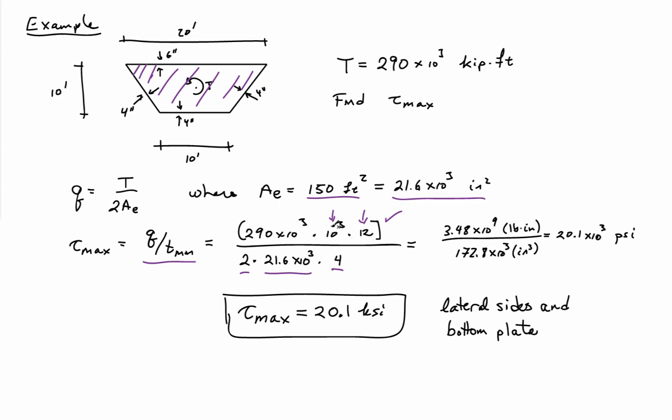Plugging everything into the calculator, I compute 20.1 times 10³ psi. So the maximum shear stress is basically 20 ksi, and that shear stress will appear all the way along the lateral sides and on the bottom plate of this box girder.